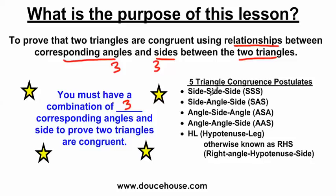The first one is the Side-Side-Side postulate. We compare the three sides of one triangle to the three sides of another triangle to see if triangles are congruent. We can abbreviate it as SSS — so you might write SSS instead of spelling out the full side-side-side postulate.